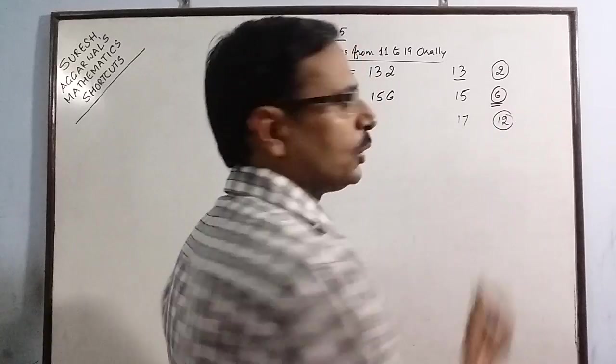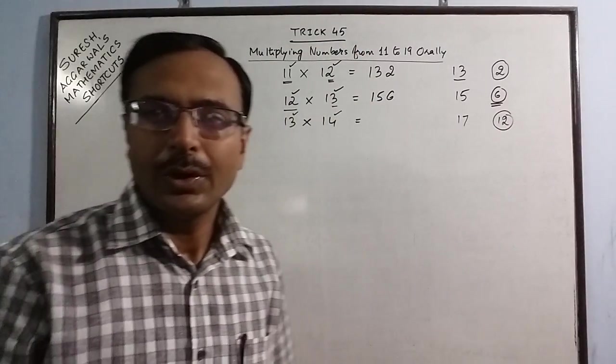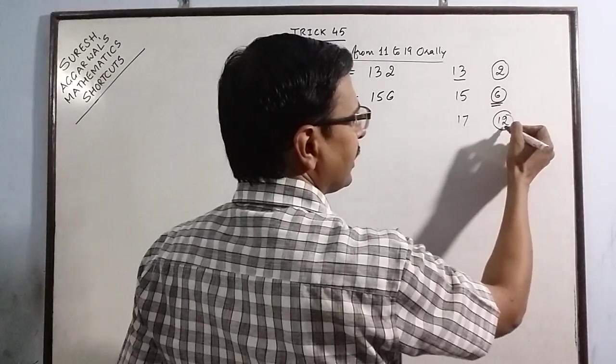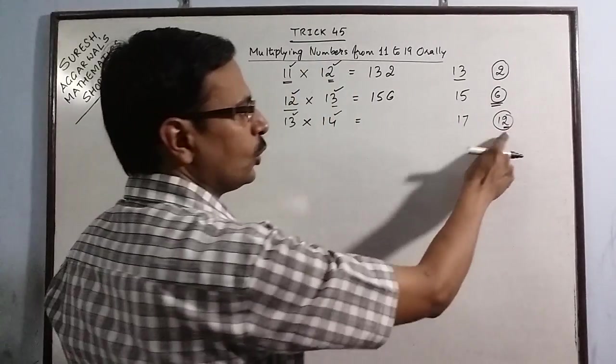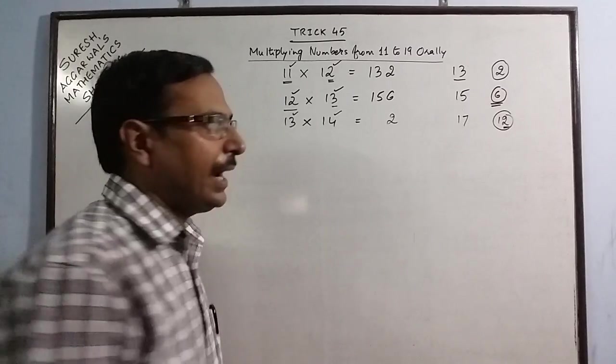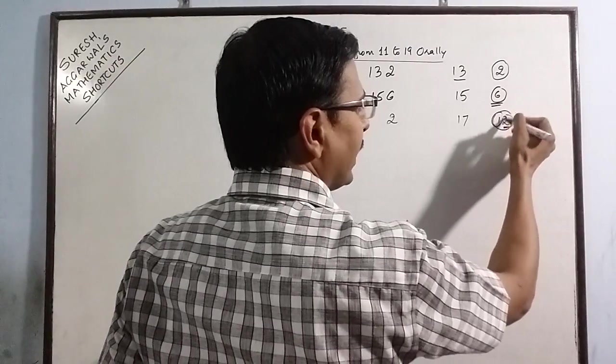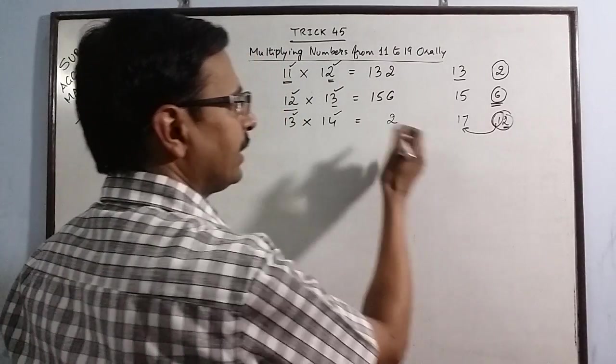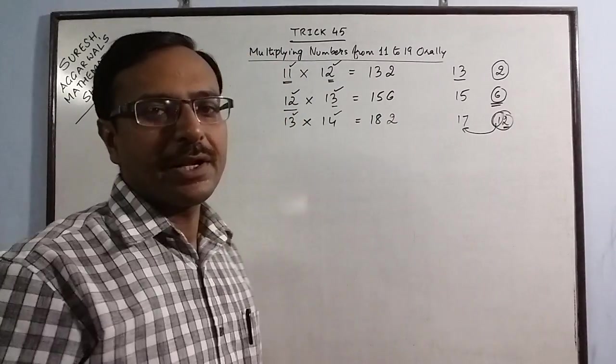Now here you have a two digit number. So one simple step is increased here. You take the units place of this product 2 as it is in the product which is required. And the remaining number 1 is to be added to this number. So 17 plus 1 is 18. So we get 182 as the product.